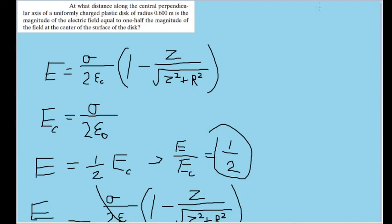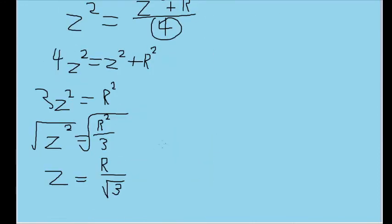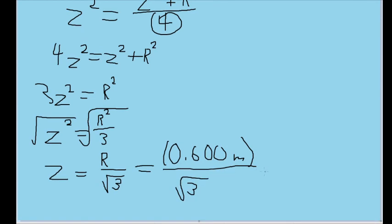Unfortunately, r is the only variable that we're given by the problem, the radius of the disk. So now let's write in the radius of the disk, which is 0.600 meters, divided by the square root of 3. And this gets us a distance of 0.346 meters.